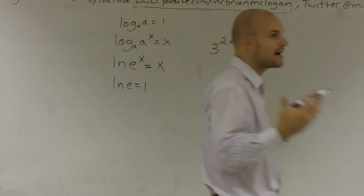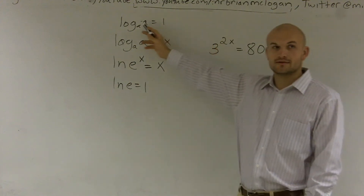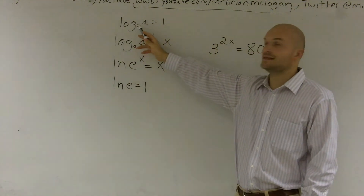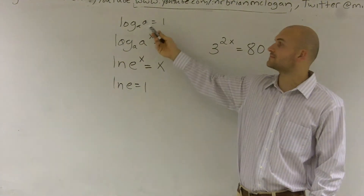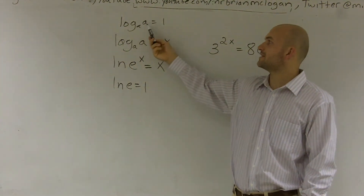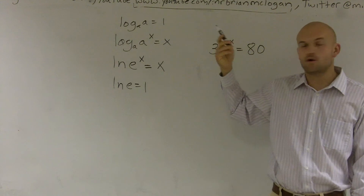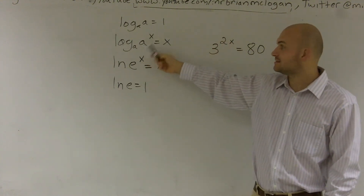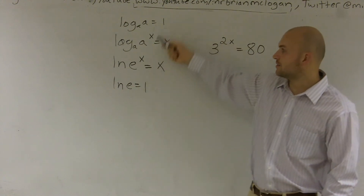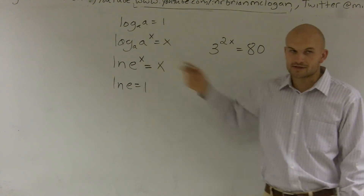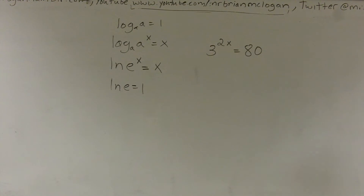Understanding the properties of logarithms, there are a couple things to remember. One thing is that any log evaluated for a base — evaluating any log for any number with that same base — is going to equal 1. Or whenever we have that base raised to an exponent, that's going to equal just that exponent. So it works for regular logs and natural logs.